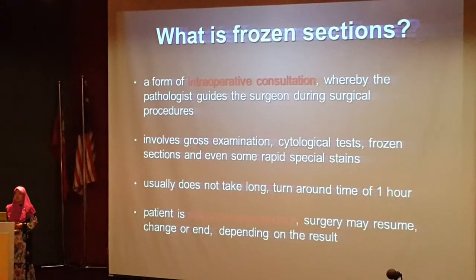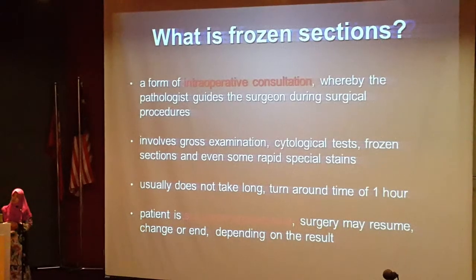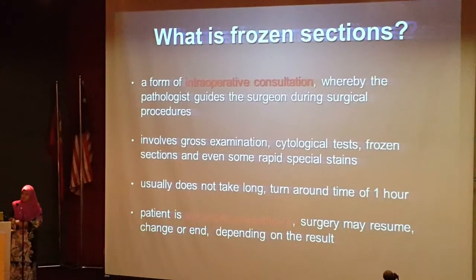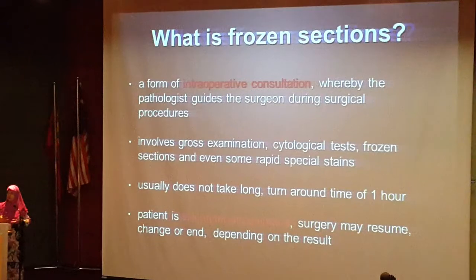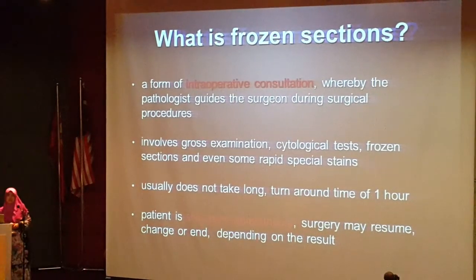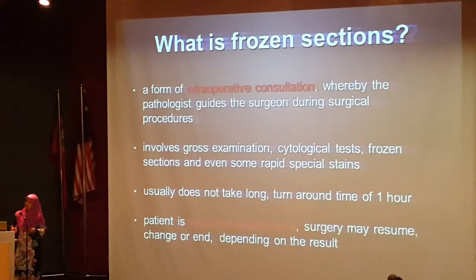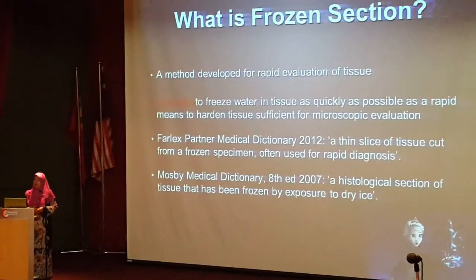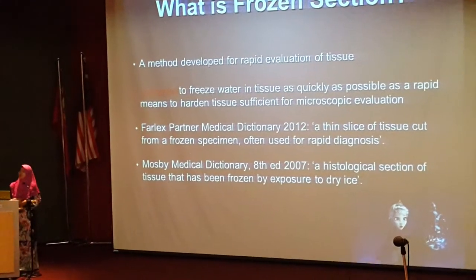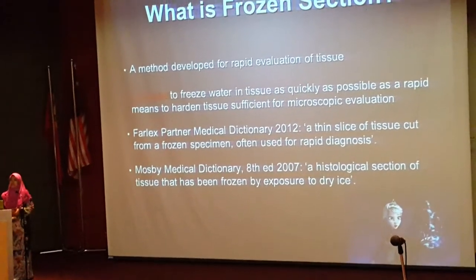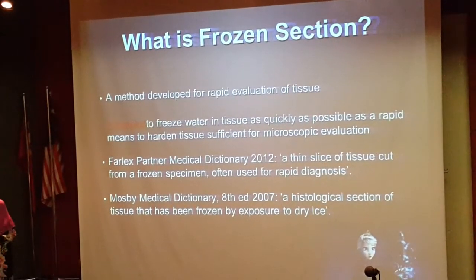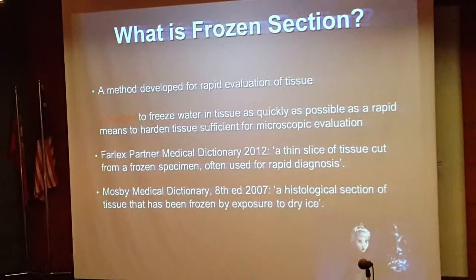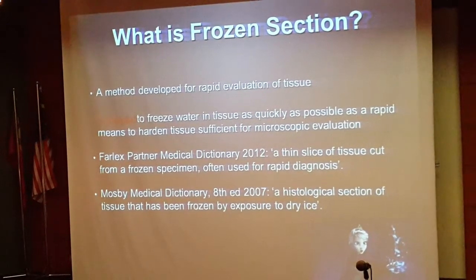It usually doesn't take long. If you send one piece of tissue, you can typically get a phone call from the pathology lab within 30 minutes, depending on the complexity of the specimen. Usually when we're doing Frozen Section evaluation, the patient is still in the OT under anaesthesia and the surgery isn't over yet. After the Frozen Section report is conveyed to the surgeon, surgery may resume. The main principle is to very quickly freeze the tissue to harden it, so we can make microscopic sections to evaluate the pathology within the sample.